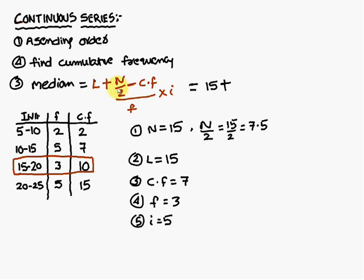Now substitute in the given formula. L is 15. N by 2 is 7.5 minus cumulative frequency 7, and F the corresponding frequency is 3 into 5. If you simplify this you get 15.8333. So in this way you have to find out the continuous series median.